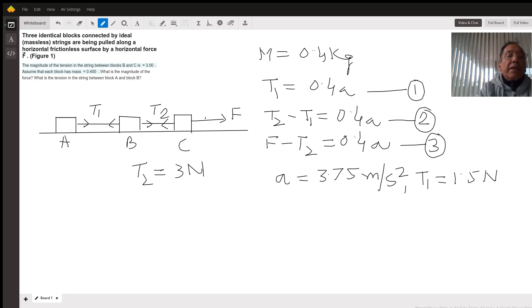For the free body diagram of mass B, it has tension T2 on this side and tension T1 on this side. Therefore, T2 minus T1 equals 0.4 times acceleration.